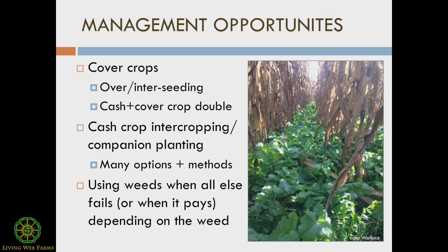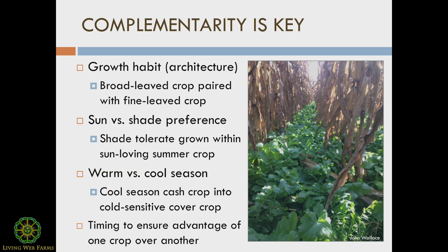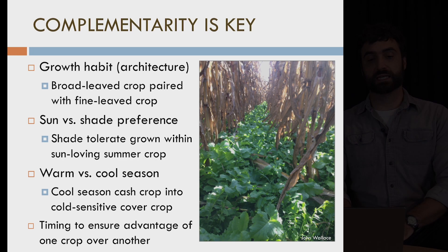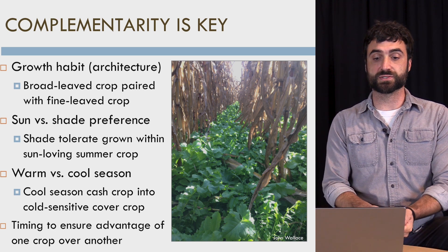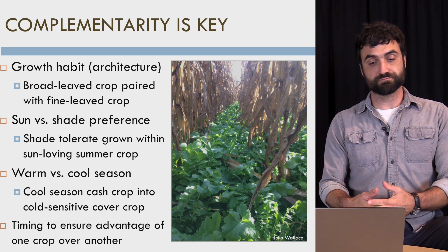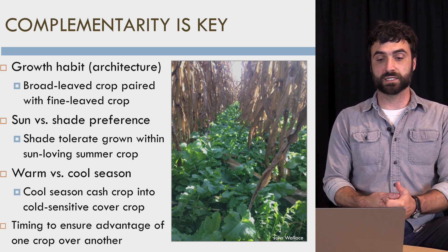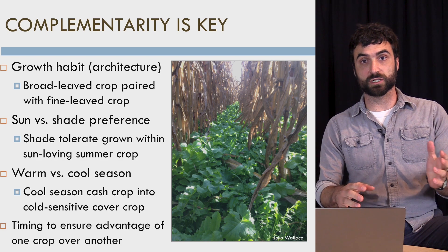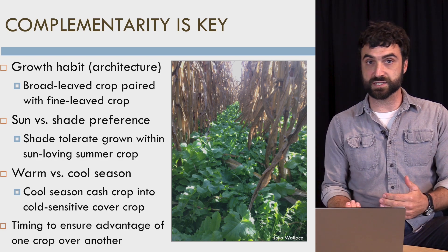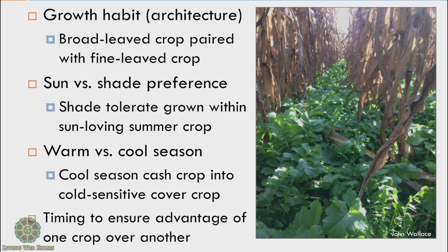The guiding concept of maximizing solar fertility is to find complementarity in the cash crops or cover crops you're growing — ones that have complementary growth habits or architecture. For example, a broad-leaf crop low to the ground sitting underneath a taller, finer-leaf crop, where sunlight can still get through. The height difference and difference in leaf shape allows that to happen. There may also be complementary preferences for sun versus shade.